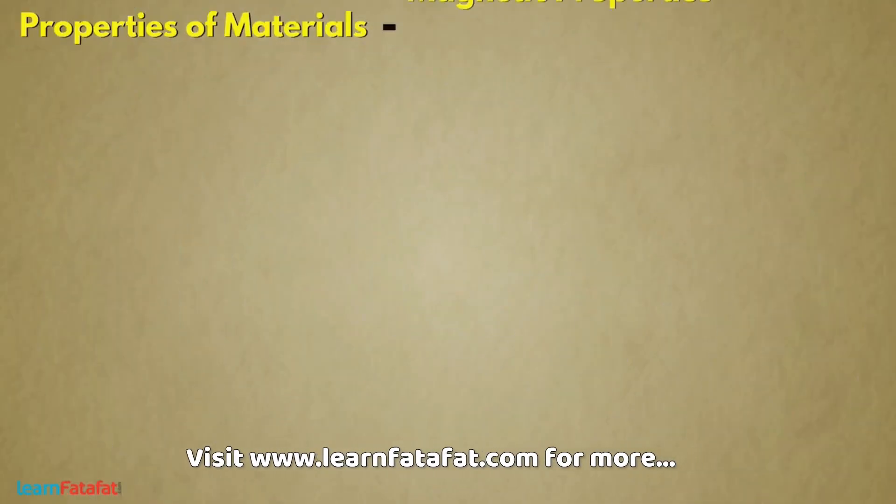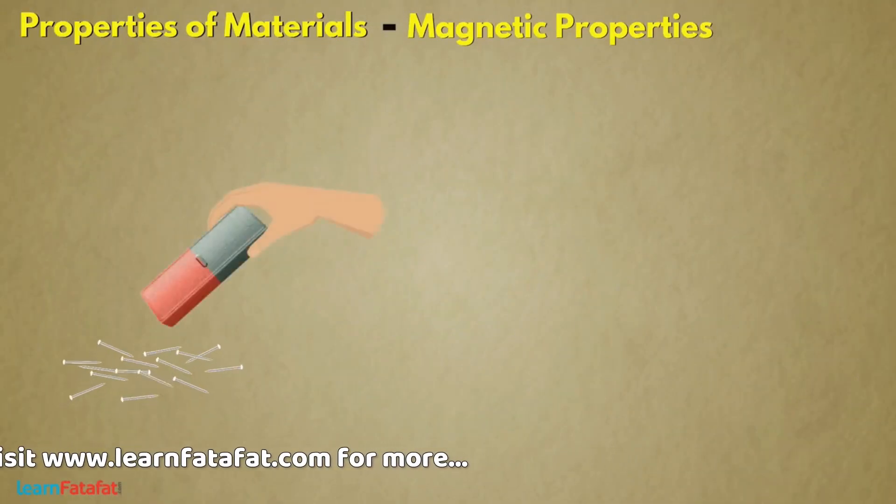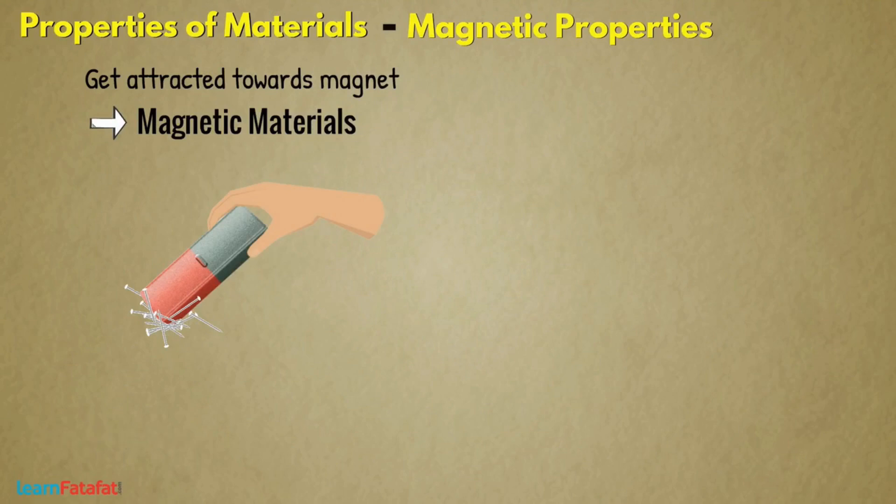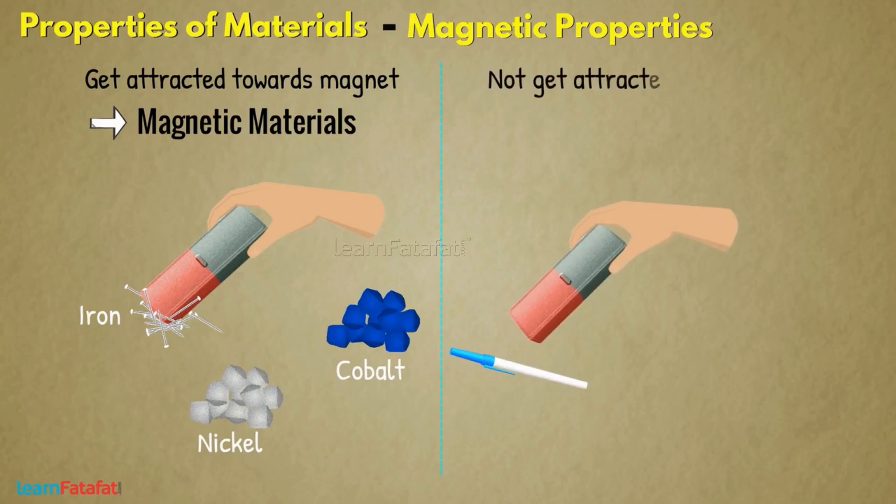Magnetic properties: Some materials get attracted towards magnet. These are magnetic materials, for example, iron, nickel, and cobalt.